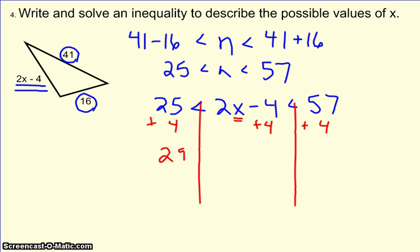So I get 29 is less than 2x, which is less than 61. So finally, to get the x alone, I'll divide everything by 2.